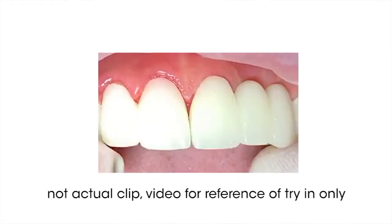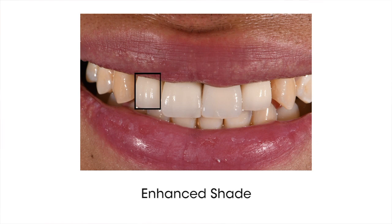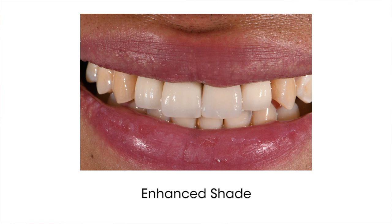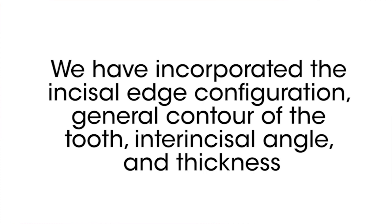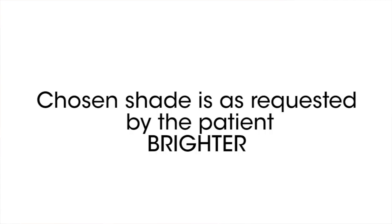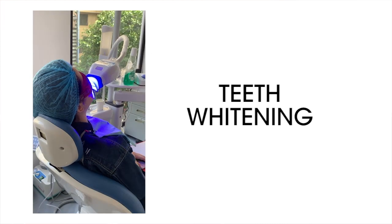After a month we were able to try in the final porcelain crowns. As you can see, there is an enhanced shade — it is really natural looking because we incorporated the incisal edge configuration: the general contour of the tooth, the incisal angle, and the thickness of the restoration. It looks really natural. There was a little bit of a concern because the shade is a little bit brighter, as per the patient's request, so what we did was teeth whitening just to balance everything.